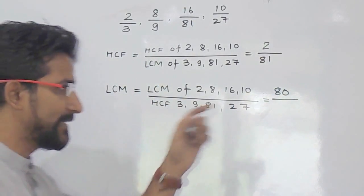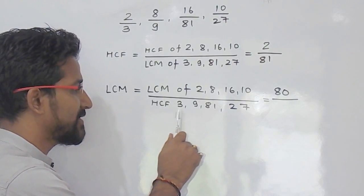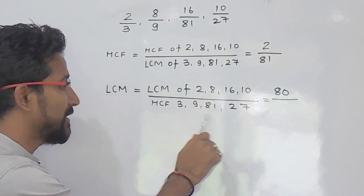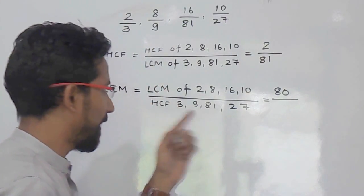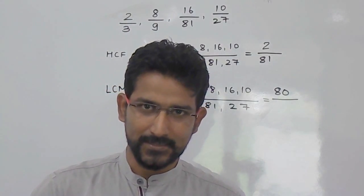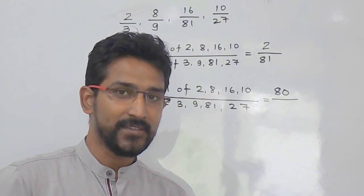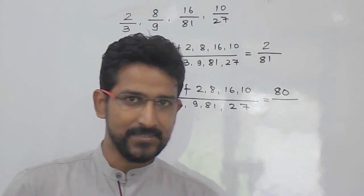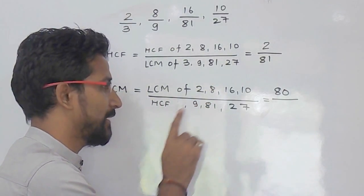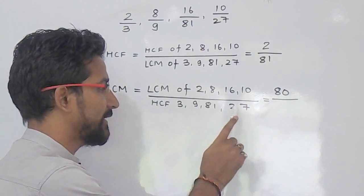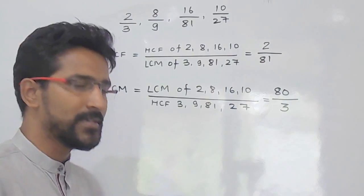Now we find the HCF of the denominators — 3, 9, 81, and 27. We take the least difference among the numbers: the difference between 3 and 9 is 6, which is the smallest. We check whether 6 is a divisor of all the numbers — it is not. So we find the factors of 6, which are 3 and 2. We try 3: 3 is divisible by 3, 9 is divisible by 3, 81 is divisible by 3, and 27 is divisible by 3. So the HCF of the denominators is 3, and the answer is 80/3.